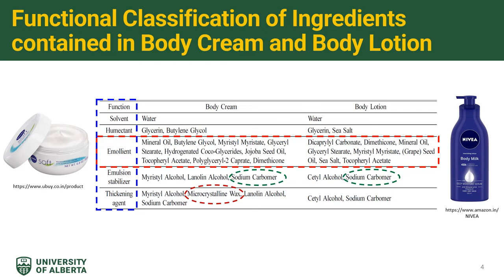Even though the composition of body cream and body lotion is highly analogous, body cream contains greater amounts of waxes, solid oil-based ingredients, volumizers and thickening agents in order to differentiate the degree of greasiness and viscosity from those of body lotion. These materials play an important role in determining the rheological properties of cosmetics more than do the aqueous constituents.